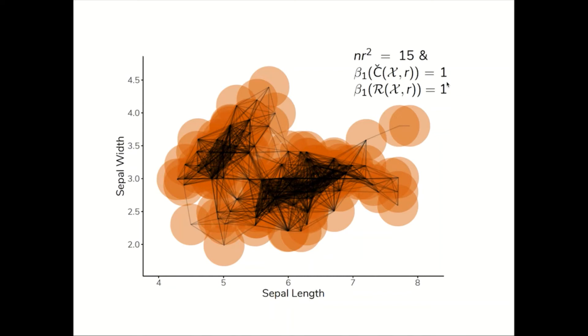Finally, when nr² is large, all the 1 cycles except for a single straggler in the lower left are canceled out. Soon the first homology will disappear. The complexes are too dense for Betti one.